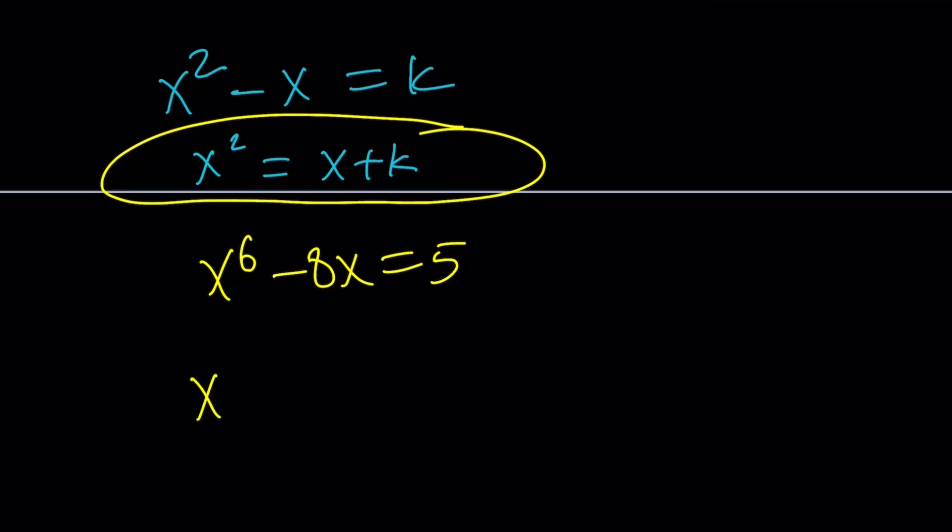So x^3 is x^2 times x, and x^2 is equivalent to x + k. Remember, that's our formula. This gives me x^2 + kx.